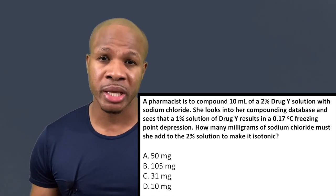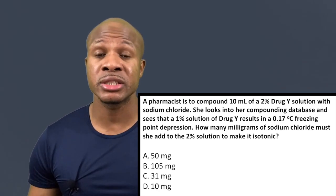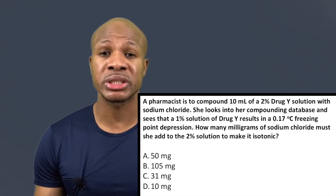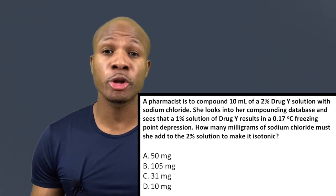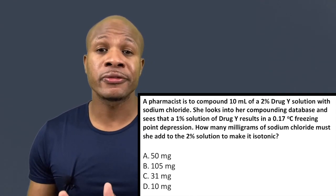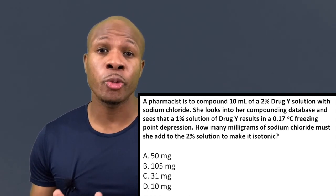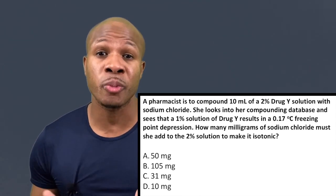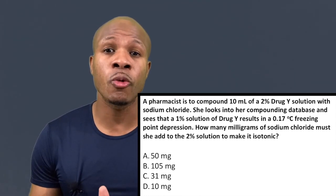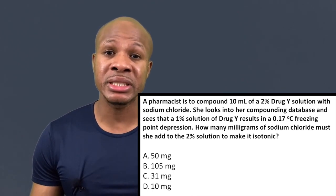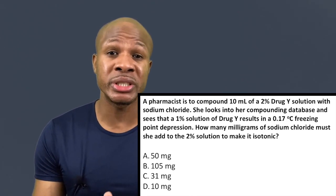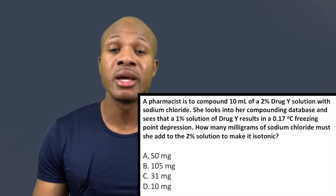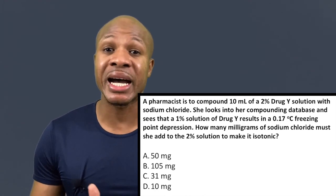To answer this question we need to know that normal saline — a 0.9% sodium chloride solution — lowers the freezing point of water by 0.52 degrees Celsius. Because freezing point depression is a colligative property, any water solution that freezes at negative 0.52 degrees Celsius is equivalent to a normal saline solution, and a normal saline solution is an isotonic solution.